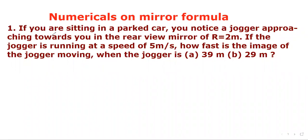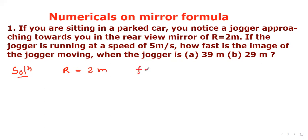Numericals on mirror formula. Question number one: if you are sitting in a parked car, you notice a jogger approaching towards you in the rear-view mirror. The radius of curvature is 2 meters. Since it is a rear-view mirror, it is a convex mirror, so its focal length will be positive: F = R/2 = 1 meter.